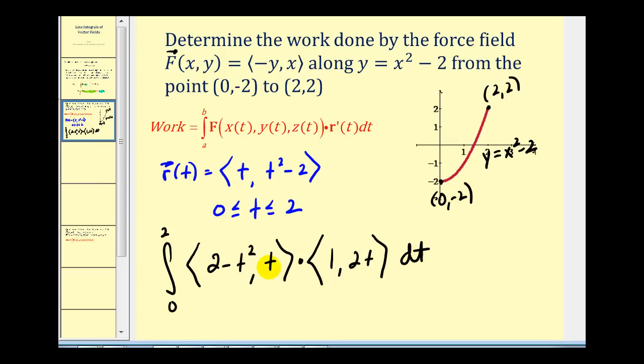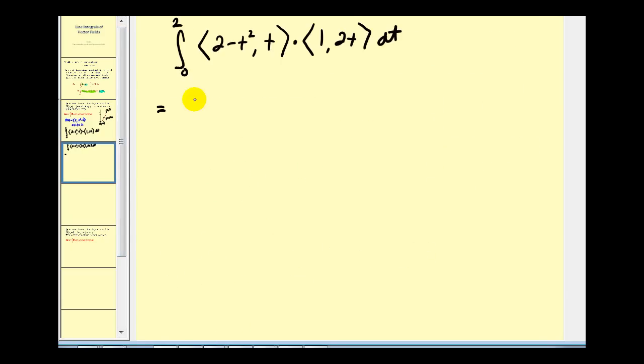Let's evaluate this on the next page. We'll have two minus T squared times one, that's two minus T squared. Plus T times two T, that'll be two T squared.